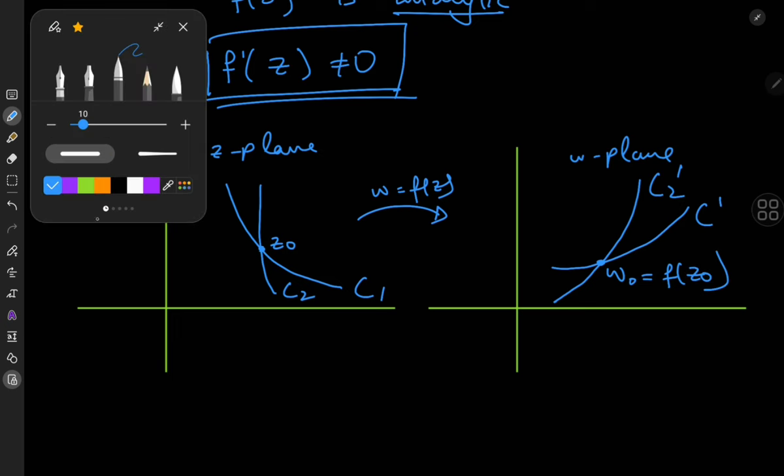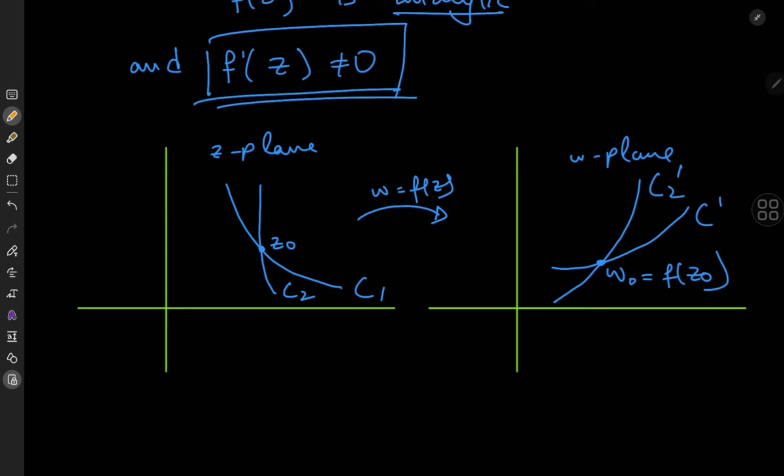So to analyze the angles between the curves I'm going to need tangent vectors. So for the curve c1 let this be the tangent vector at z-naught, that is dz1. And for the curve c2 similarly I have dz2.